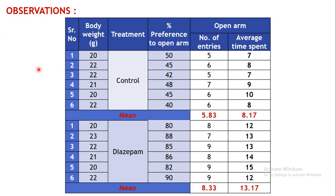These are the observations. In the case of the control group, the percent preference to the open arm is around 45%. The number of entries in the open arm is relatively low — approximately 5.83 on average. The average time spent in the open arm is calculated as total duration spent in the open arm divided by the number of entries, giving an average of approximately 8.17 seconds per visit.